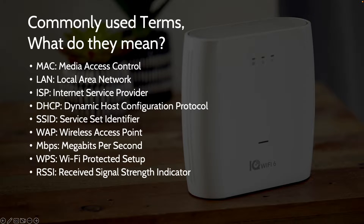Mbps, or megabits per second, is the measurement of data used to define network connectivity. Similar to the way a water company might measure GPS or gallons per minute, your ISP measures network service by the speed at which data flows in and out of your network. WPS, or Wi-Fi Protected Setup, is an easy button that allows you to connect to an SSID or network name without needing to know much about that SSID or network name encryption.